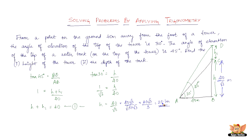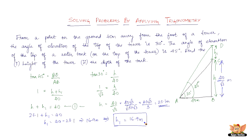Now that we've found H, all we have to do is substitute into equation one. We have 23.1 + H1 = 40, so H1 = 40 − 23.1 = 16.9 meters. The depth of the water tank is 16.9 meters. All you need to do is analyze the given data, determine whether to use sine, tan, or cosine, and then solve. I'll see you in the forthcoming videos with more problems based on the same topic.